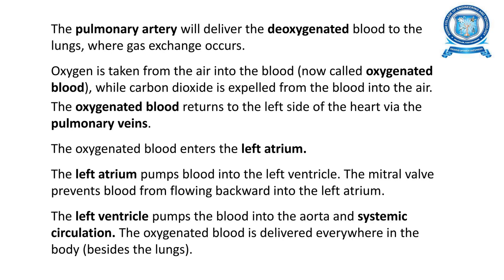Oxygen is taken from the air into the blood while carbon dioxide is expelled from the blood into the air. The oxygenated blood returns to the left side of the heart via the pulmonary veins. The left atrium pumps blood into the left ventricle, and the left ventricle pumps the blood into the aorta and into systemic circulation.